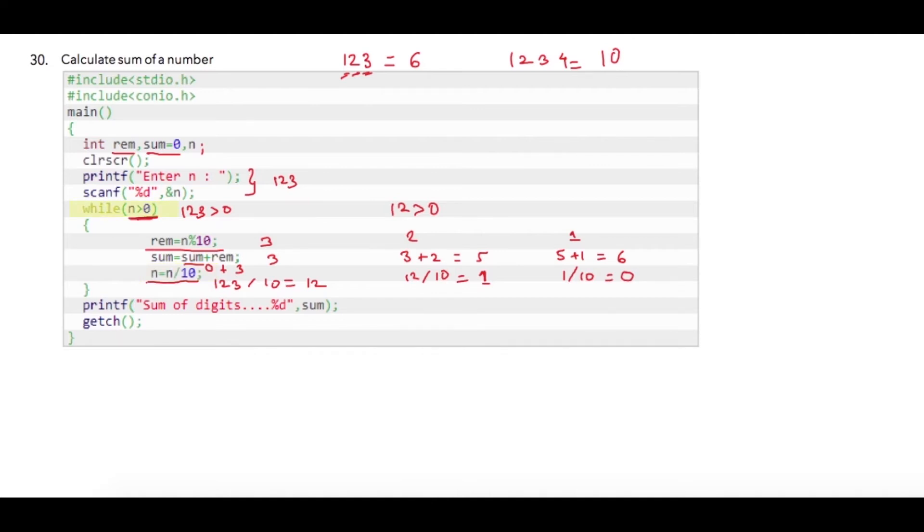And once it goes back again to check the condition, 0 greater than 0, which is a false condition, so it will terminate the loop. And once it comes out of the loop, then we are printing value of sum. So sum of digits is equal to sum.